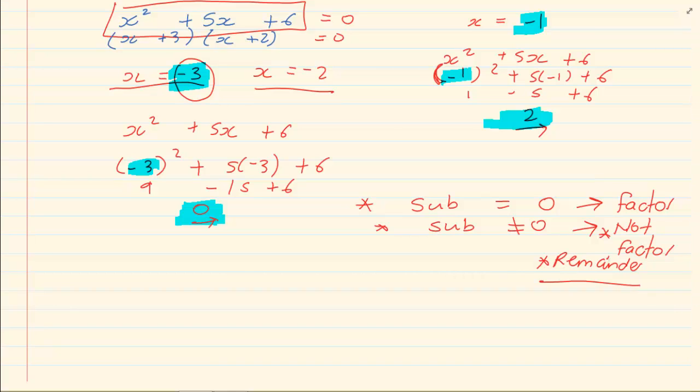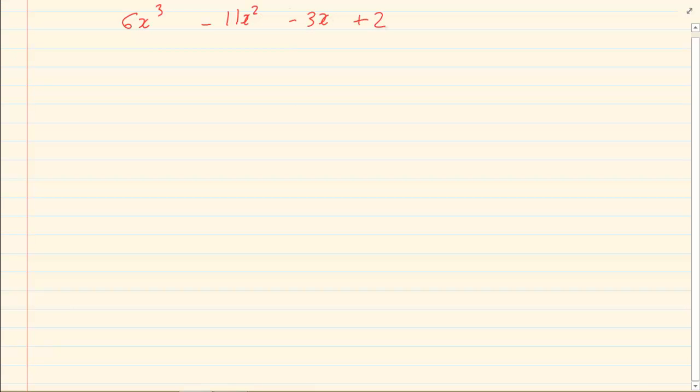Why would this be beneficial to us? What is the purpose of this? When you are doing complex sums, let's take for example 6x cubed minus 11x squared minus 3x plus 2.